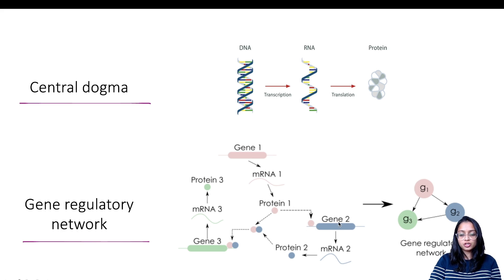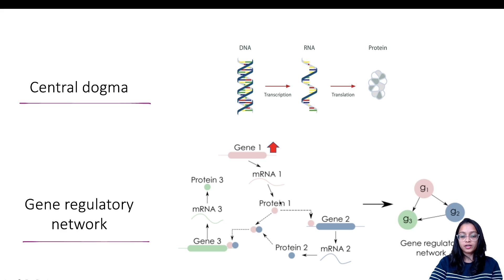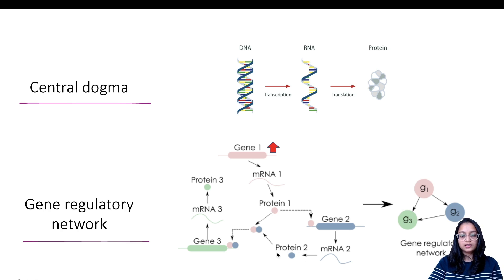Protein 1 is required for gene 2 to be transcribed — it binds to the promoter region of gene 2 and transcribes it to mRNA2, which is translated into protein 2. Now protein 1 and protein 2 are both required to transcribe gene 3 — they bind to the promoter region of gene 3, which is transcribed into mRNA3 and protein 3. So high expression of gene 1 means more mRNA1, which means more protein 1, which results in more mRNA2 and higher expression of gene 2.